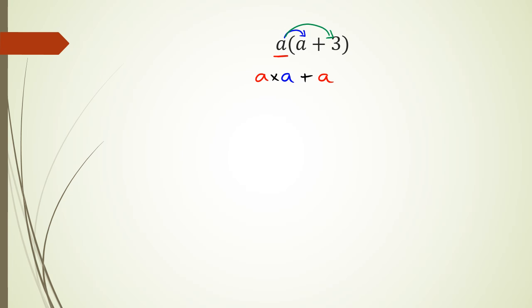Writing it like this is not necessary because you can straight away go from a times a times a is a squared, and then a times 3 is 3a. So you don't actually need to do this intermediate step; you can go directly from here to here.